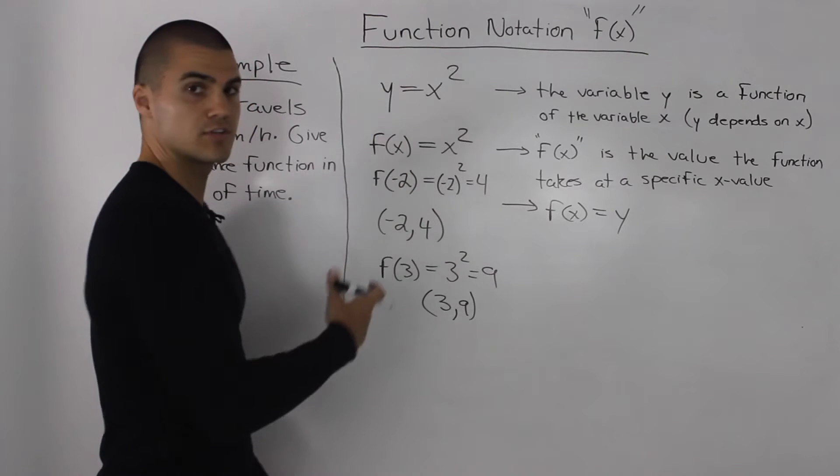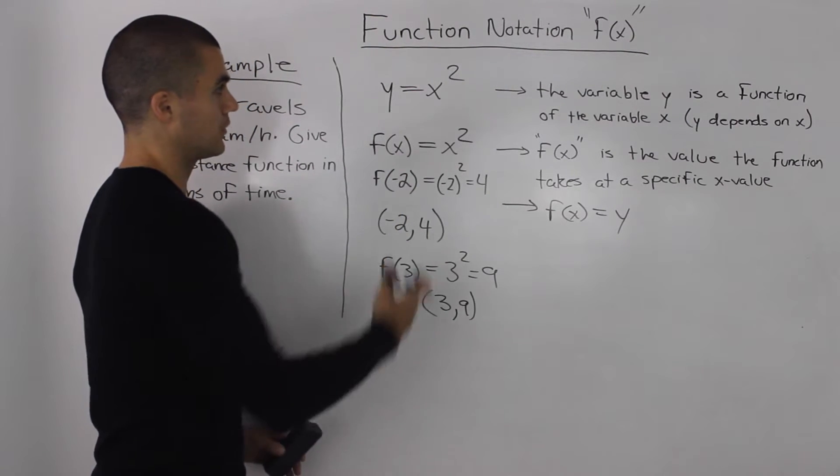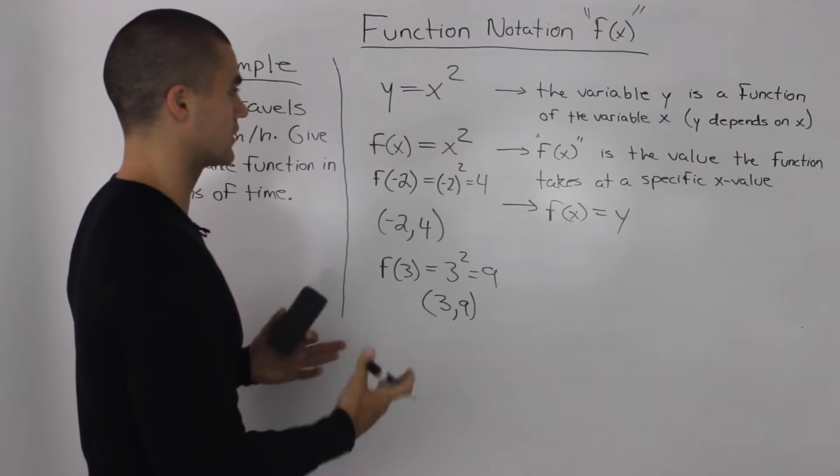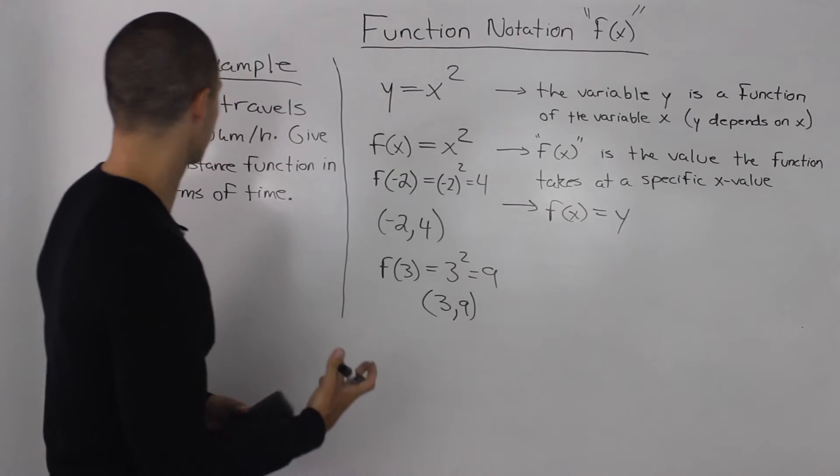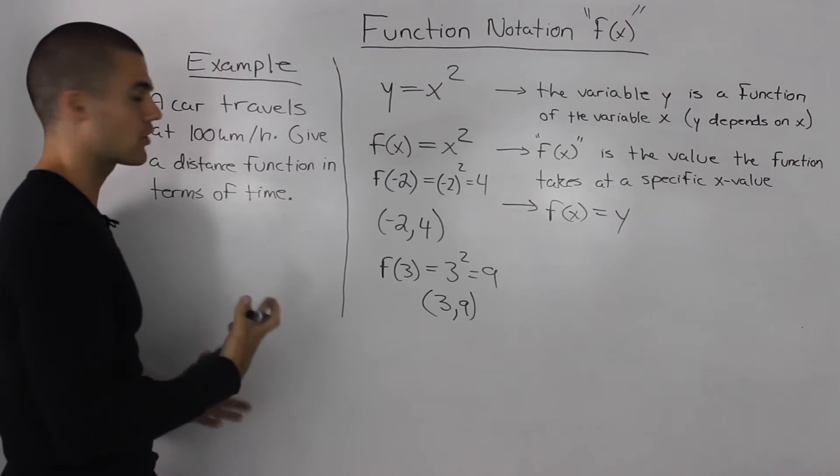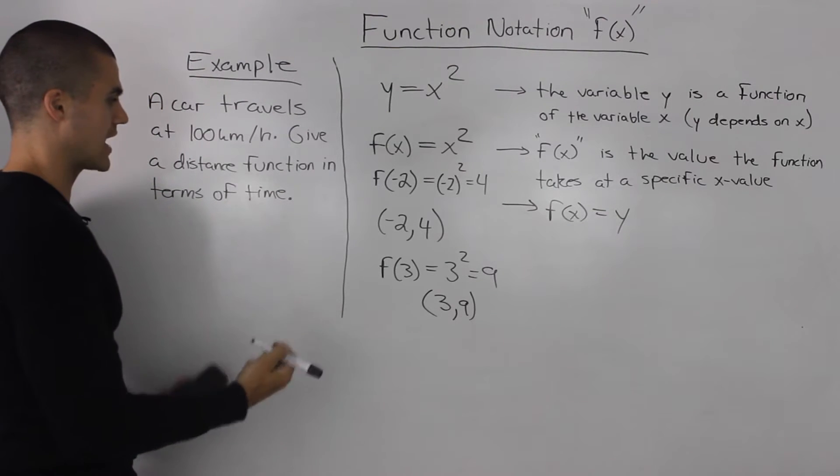Now we don't always have to use f of x to represent the dependent variable and we don't always have to use x to represent the independent variable. Sometimes it's more appropriate to use different letters. So for example, let's say we have a scenario in which a car travels at 100 kilometers per hour. Give a distance function in terms of time.